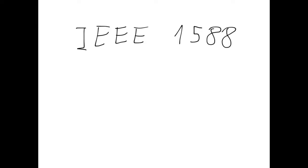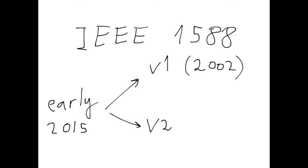As of early 2015, two versions of the standard have been published. The first version was published in 2002. The second version was published in 2008. The second version supersedes the previous one, and it is not backwards compatible.